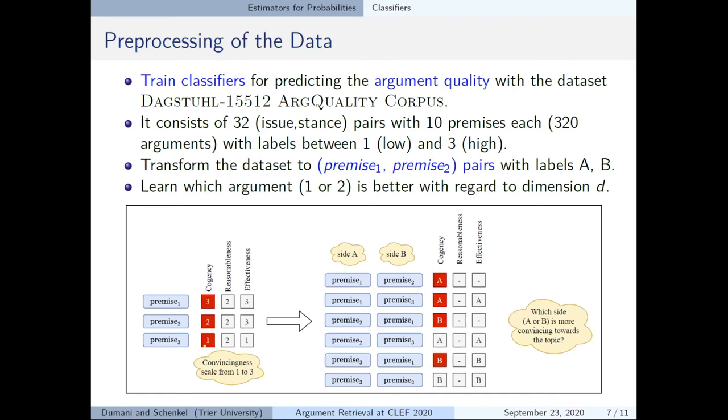In the figure with regard to cogency, premise 1 with label 3 is better than premise 2 and 3 with labels 2 and 1. And here we discarded pairs with equal values. For example, we have no labels for the dimension reasonableness in this example as all values are 2.